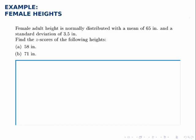Here we're told that female adult height in some population is normally distributed with a mean of 65 inches and a standard deviation of 3.5 inches. We're asked to find the z-scores of two heights.